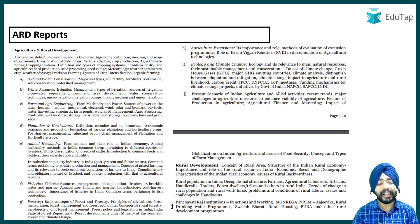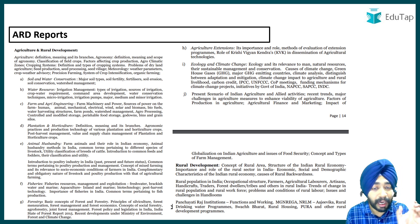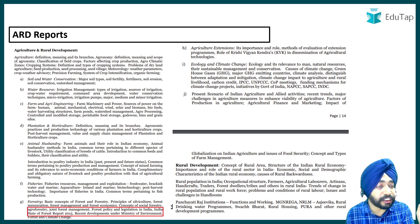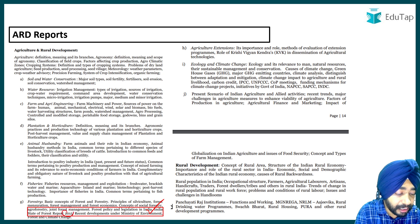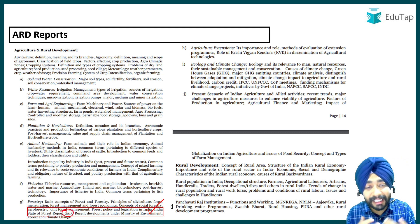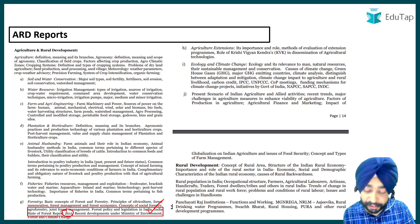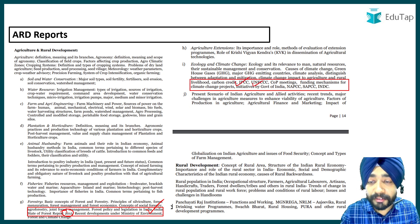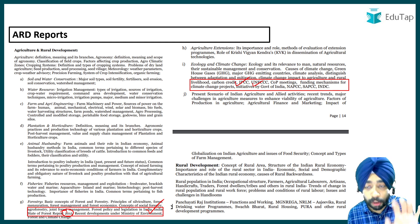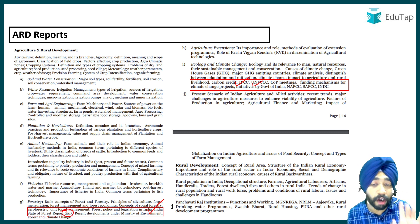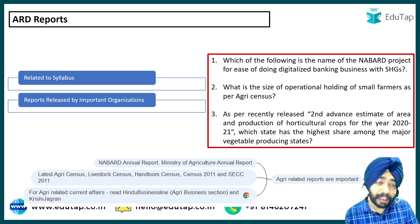Now let's move to the ARD section. In ARD also, you will see some specific things hidden in the syllabus. For example, the Indian State of Forest Report is directly mentioned in the syllabus, which means the latest edition has to be covered thoroughly in your examination. Similarly, organizations like IPCC and UNFCCC — the United Nations Framework Convention on Climate Change — are directly mentioned in the NABARD syllabus. The reports of these organizations play a very prominent role.